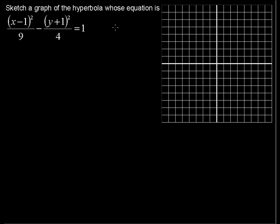Sketch a graph of the hyperbola whose equation is (x - 1)² over 9 minus (y + 1)² over 4 equals 1.